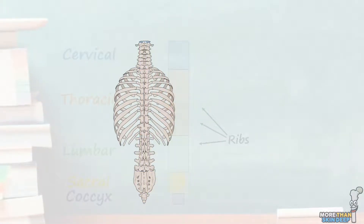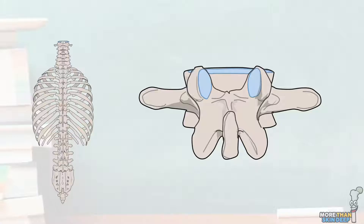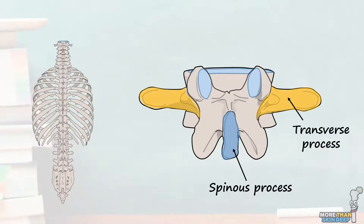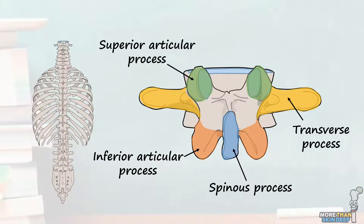There are subtle differences between the vertebrae of each spinal level, but today let's just look at the features essential to understand the deep back muscles. Projecting posteriorly from almost every vertebra is a central protrusion known as the spinous process. Projecting outwards posterolaterally are the paired transverse processes. Projecting upwards are the paired superior articular processes, and downwards are the inferior articular processes. The broad, flatter section that all of these processes connect to is known as the lamina.